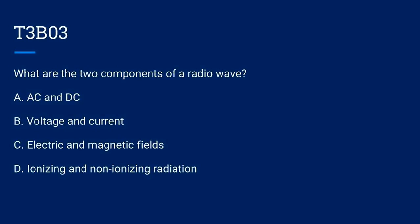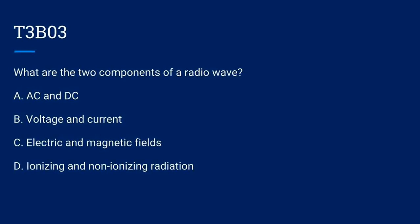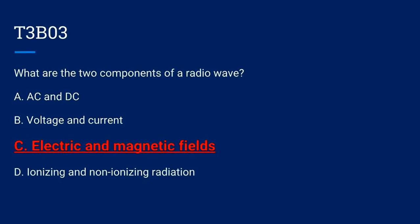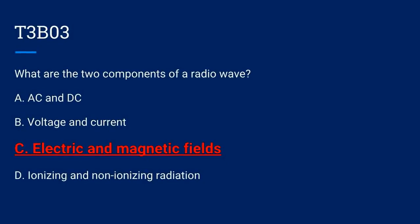T3B03. What are two components of a radio wave? A. The AC and the DC. B. Voltage and current. C. Electric and magnetic fields. D. Ionizing and non-ionizing radiation. The correct answer is C: electric and magnetic fields.